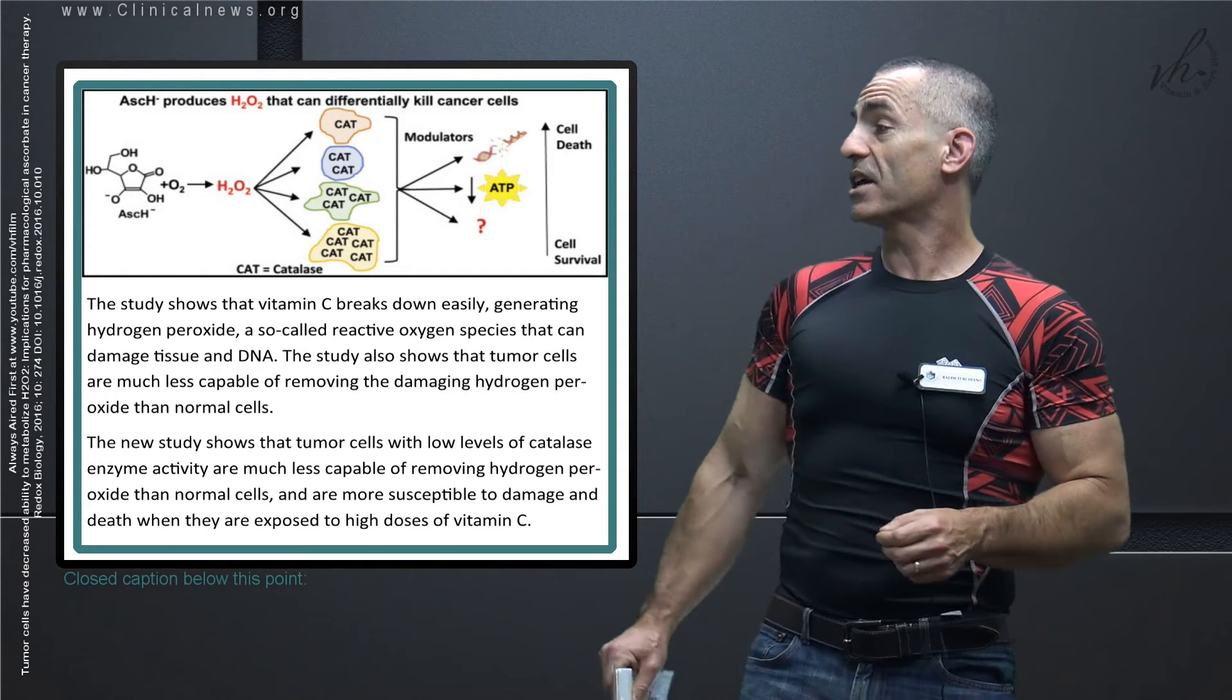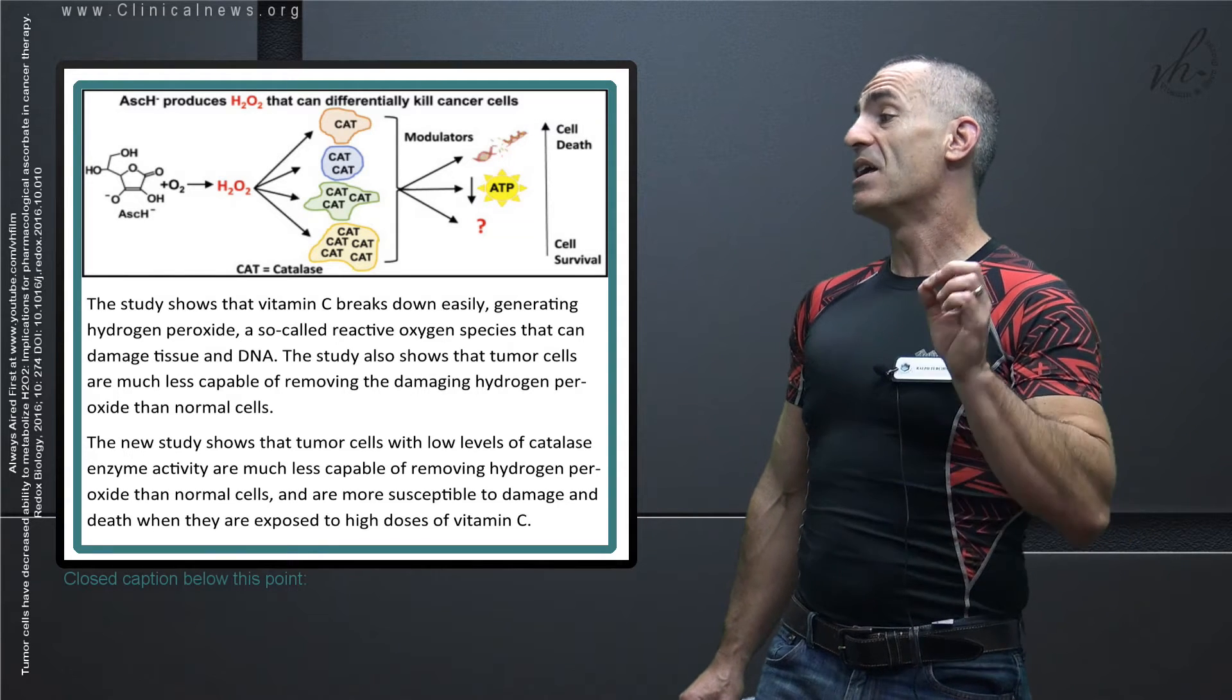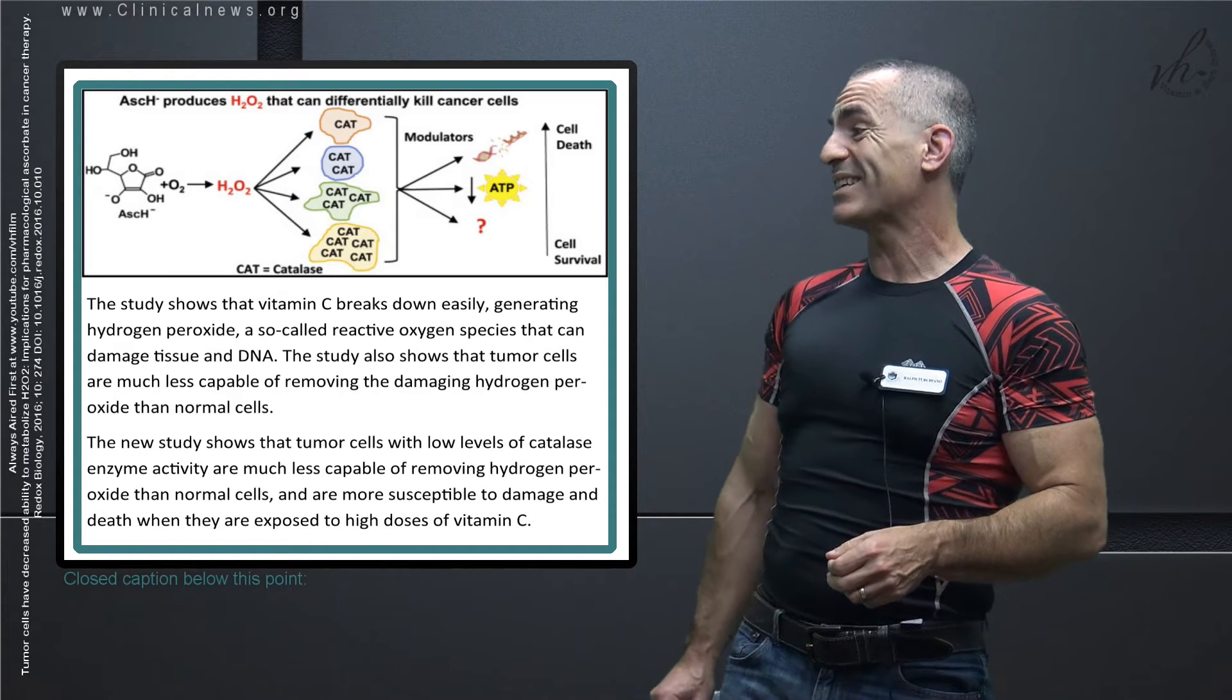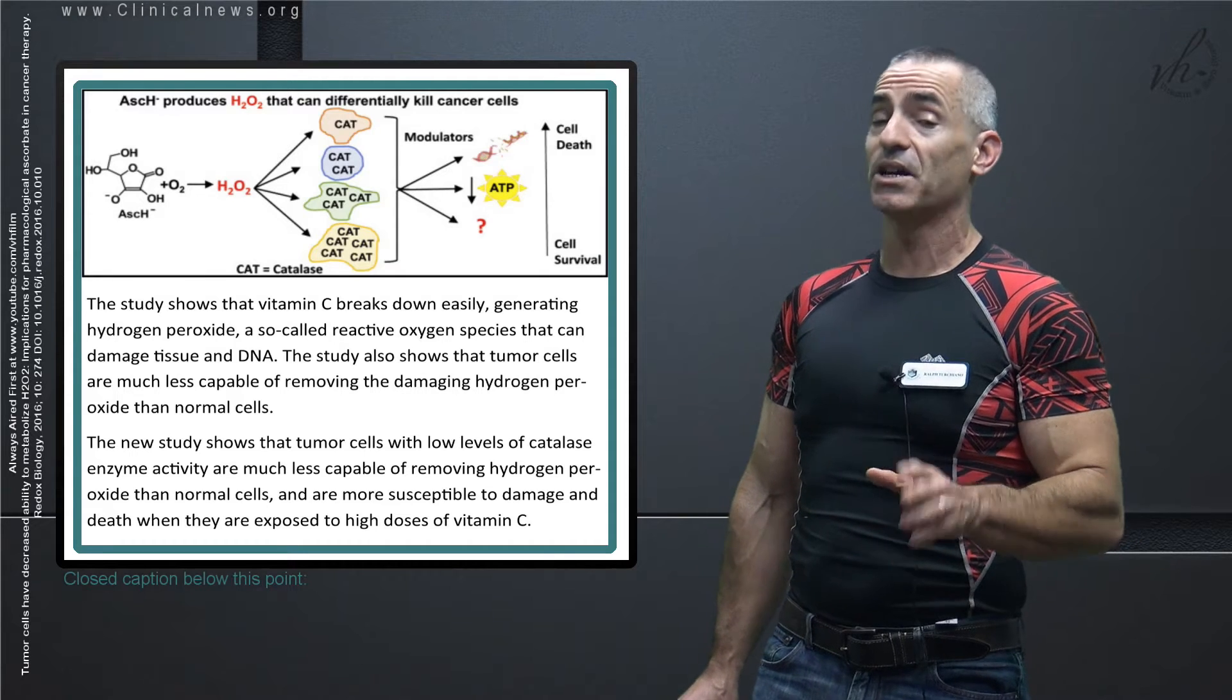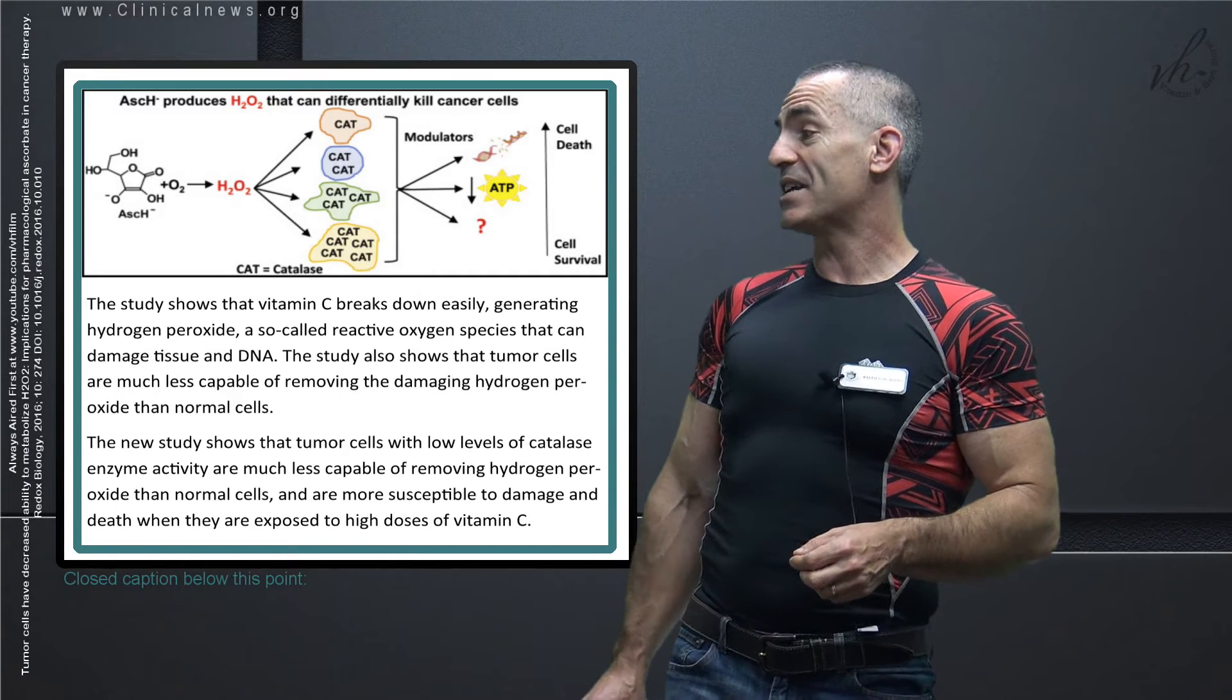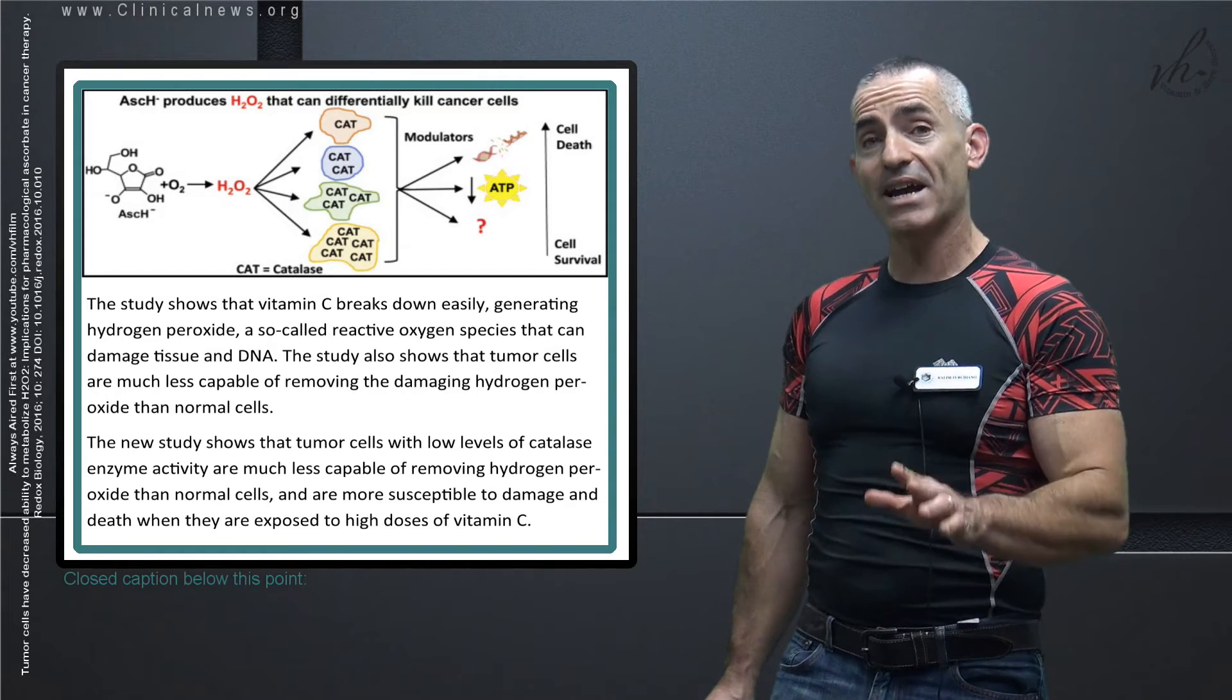The study shows that tumor cells are much less capable of removing the damaging hydrogen peroxide than normal cells. Tumor cells with low levels of catalase enzyme activity are much less capable of removing hydrogen peroxide than normal cells and are much more susceptible to damage and death when exposed to high doses of vitamin C.